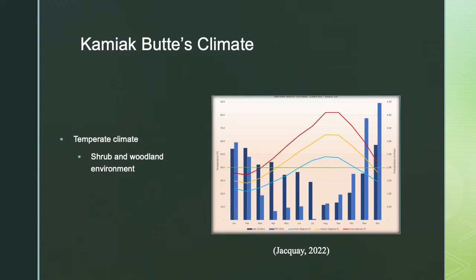The climate in Kamiak Butte is a temperate climate with a shrub and woodland environment. As seen in the graph, the average rainfall over the last 126 years is the lowest in the summer months into fall and the highest in the winter and spring. This past year in 2021 there was a major drought causing wildfires, with precipitation far below average at less than half an inch. Temperatures rise to the highest in August and September at around 60 to 80 degrees and fall to the lowest in February at around 20 to 30 degrees.